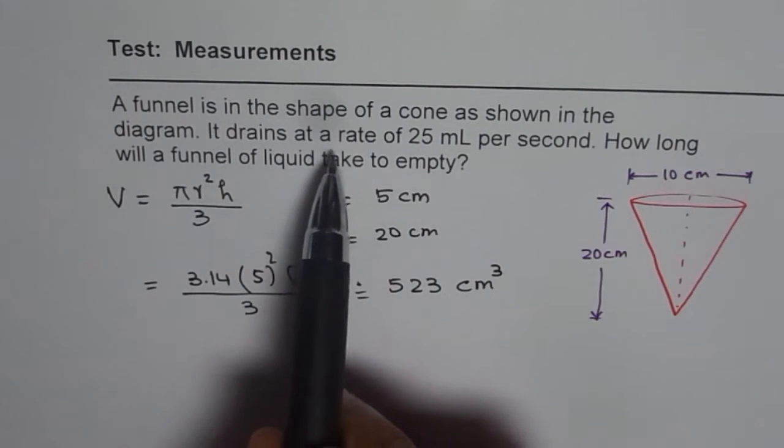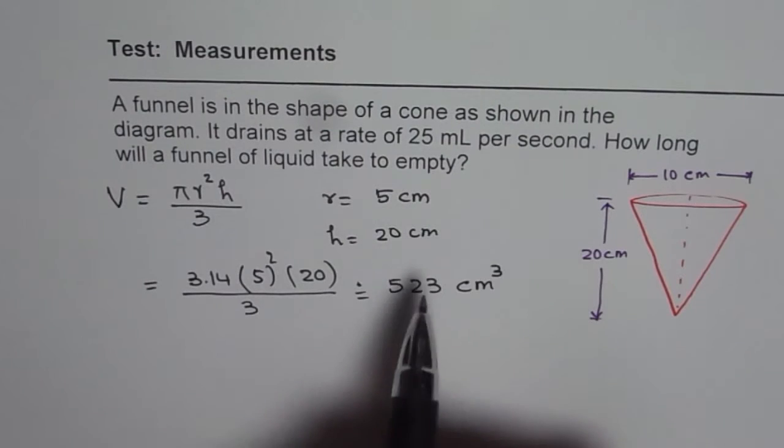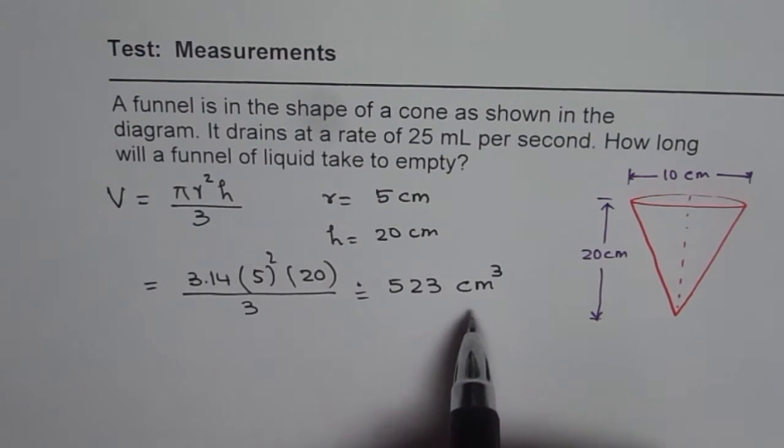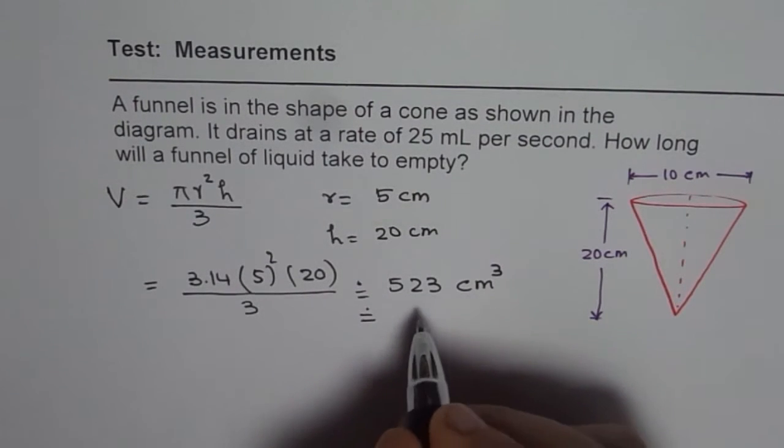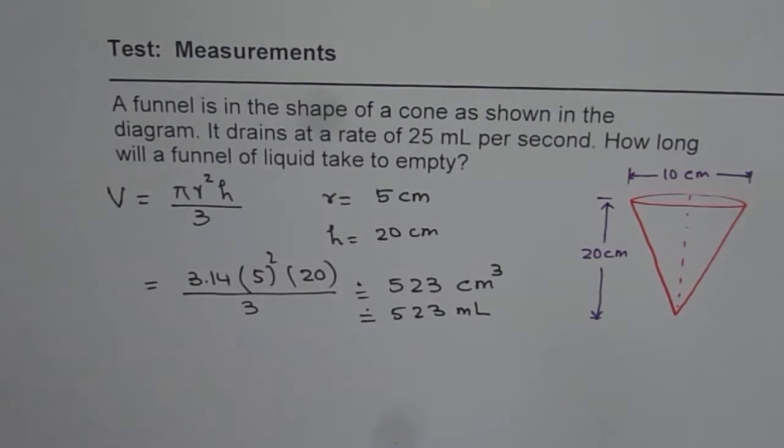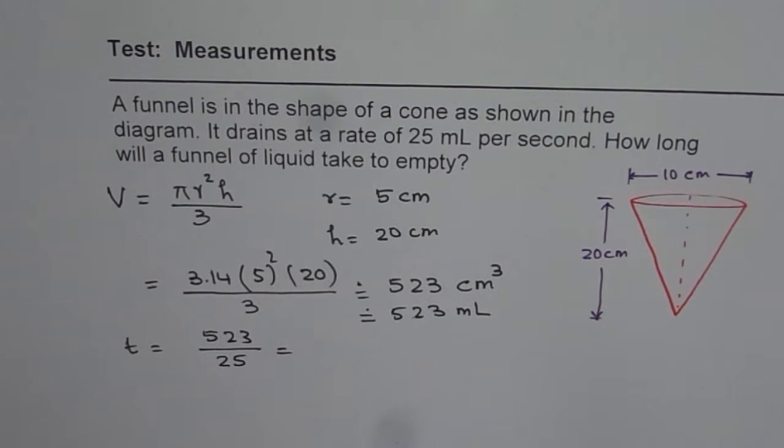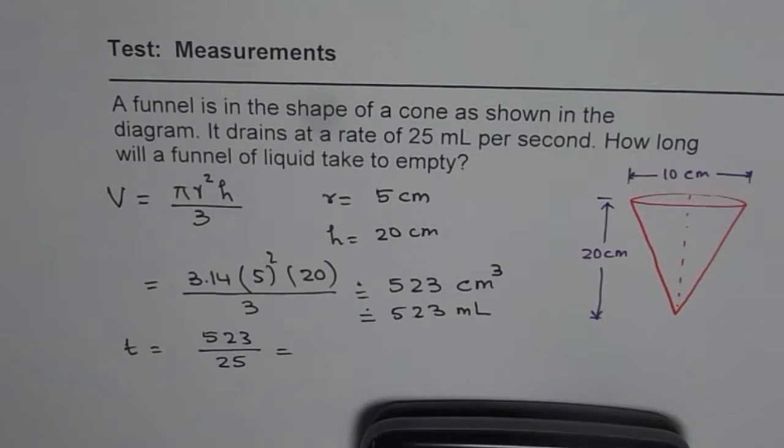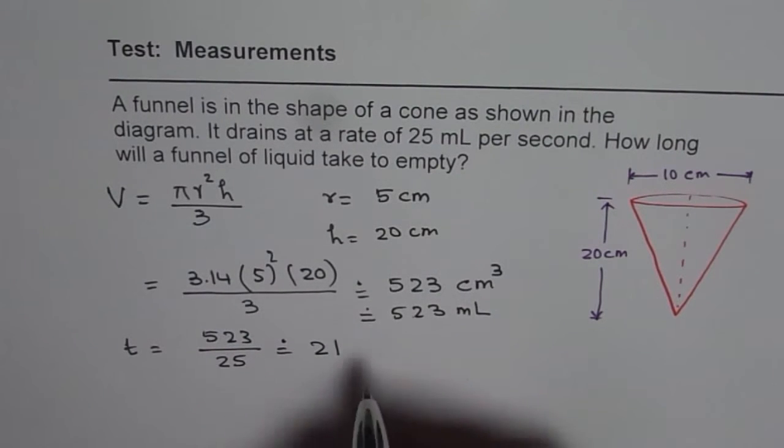Now we are given that it drains at a rate of 25 milliliters per second. So how much time will it take to drain 523 cm³? Well, 523 cm³ is also 523 milliliters. So the time taken will be 523 divided by 25 which gives us 20.9, so we can say rounded to 21 seconds.